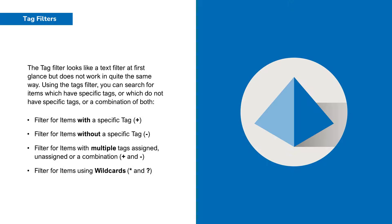The tag filter looks like a text filter but it doesn't work in quite the same way. Using the tag filter you can search for items which have specific tags, or which do not have specific tags, or a combination of both.